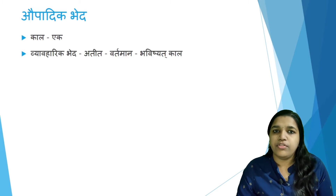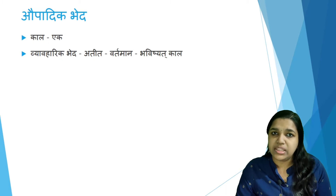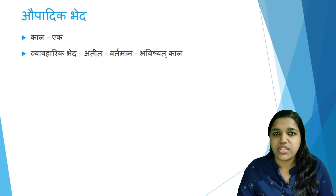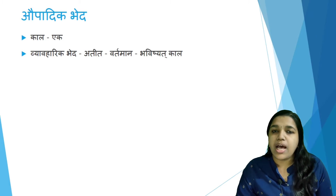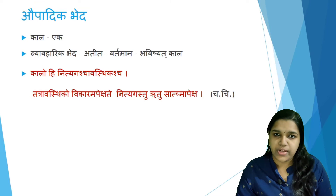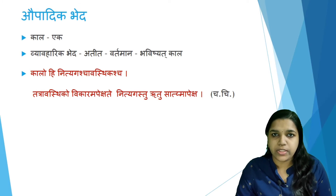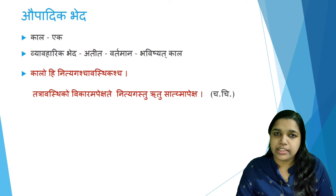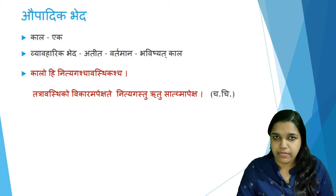Aupadika Bheta of Kala: it has already been mentioned that Kala is Eka, and for better understanding it has been divided into different types. Kala is only one, but for Vyavaharika Bheta — better understanding — it has been classified into Atita, Vartamana, and Bhavishyat Kala, that is past, present, and future. Further, Kala can be classified into two: Nityaga and Avastika Kala. Avastika Kala refers to the Vikara — that is, disease conditions or the conditions of disease manifestation.